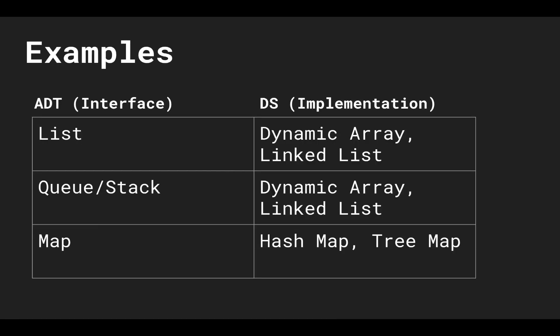Here are some examples of abstract data types and the data structures that they hide complexity for. A list can be implemented with a dynamic array or a linked list. A queue and stack could be implemented again with a dynamic array or linked list. And a map can be implemented with a hash map and tree map.